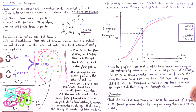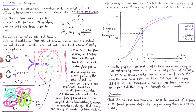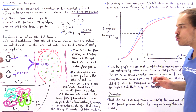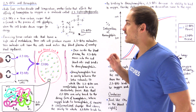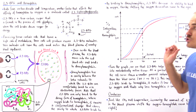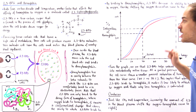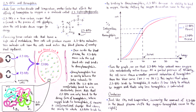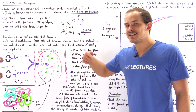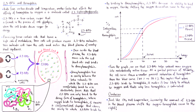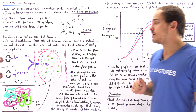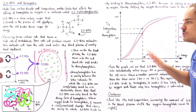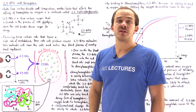More oxygen unloads into exercising tissues with high metabolic rates when 2,3-BPG is present. Just like increasing temperature or carbon dioxide concentration, increasing 2,3-BPG concentration shifts the entire oxygen-hemoglobin dissociation curve to the right. Conversely, decreasing the concentration of 2,3-BPG shifts the curve to the left.